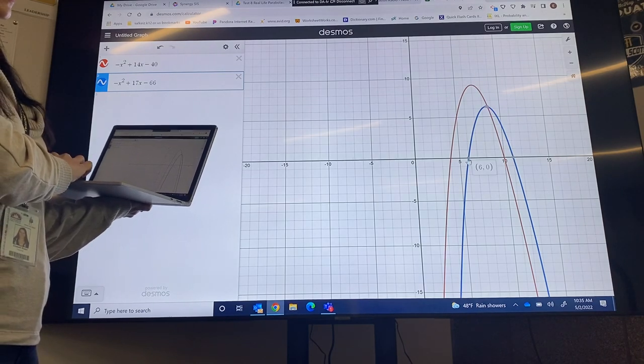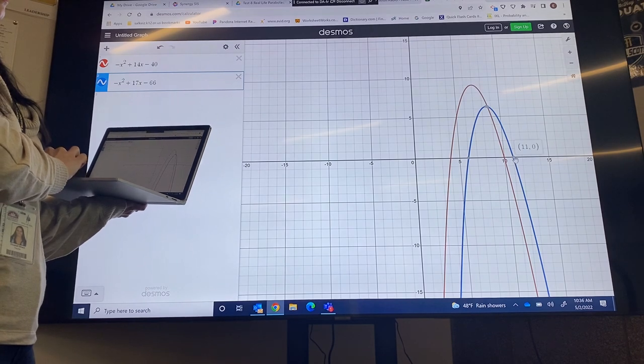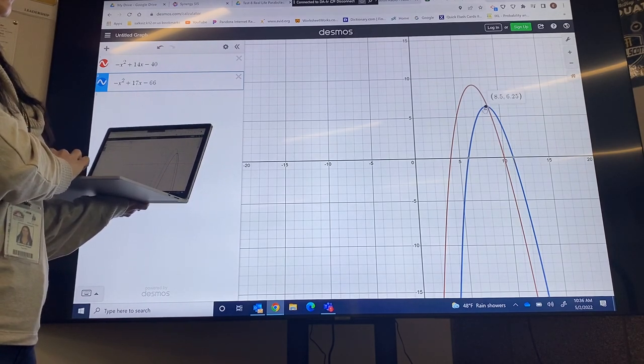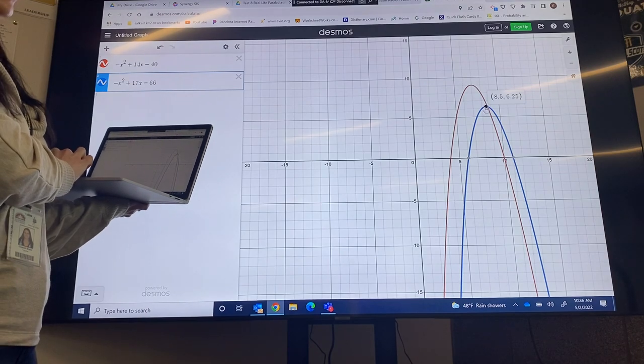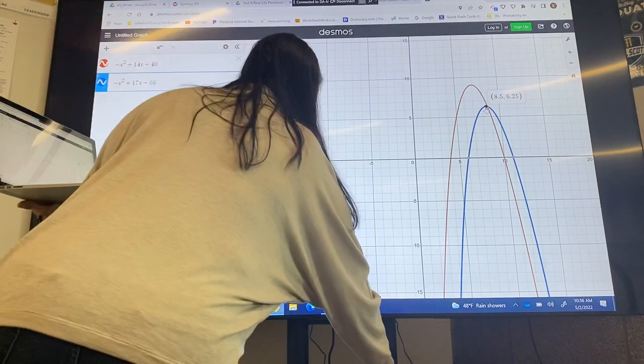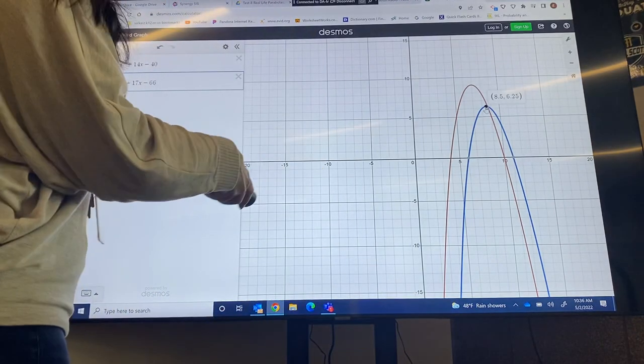So we've got roots at (6, 0) and (11, 0), and then the vertex is up here at (8.5, 6.25). So I'm going to switch back to the worksheet view, but I just wanted you to see where I got the points from.